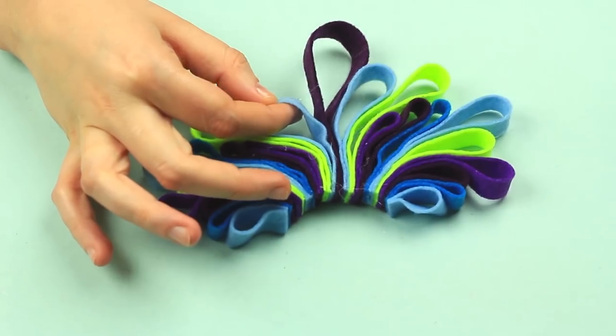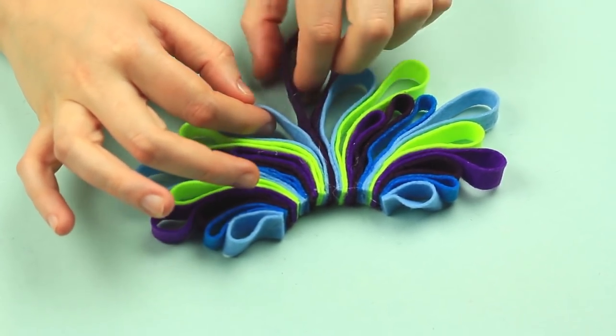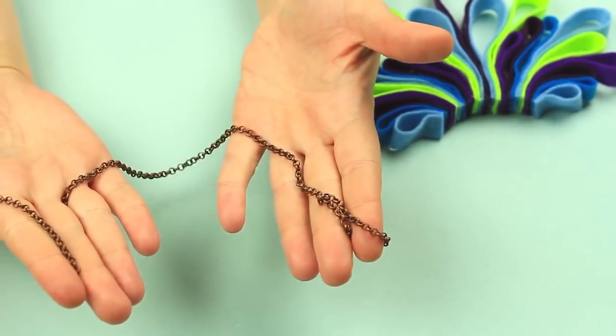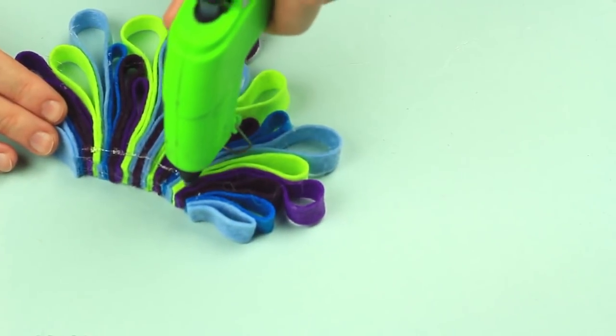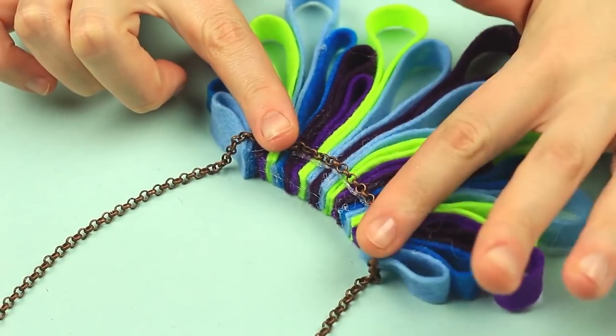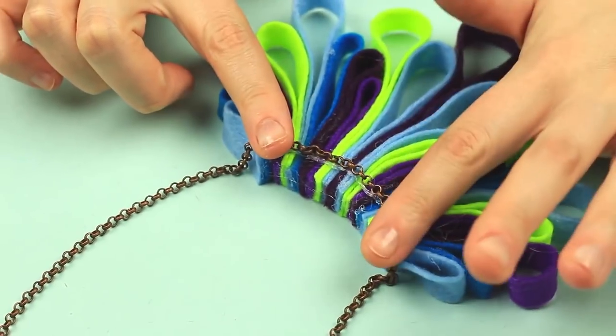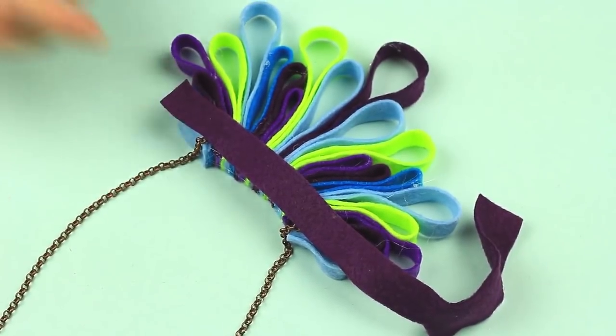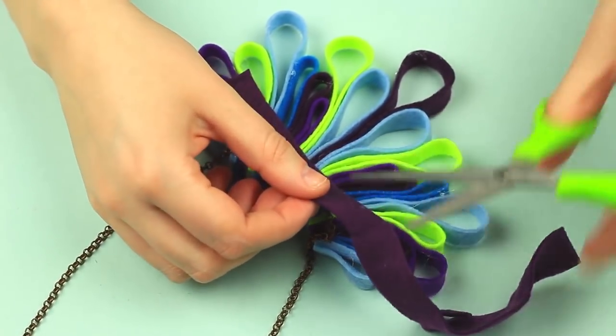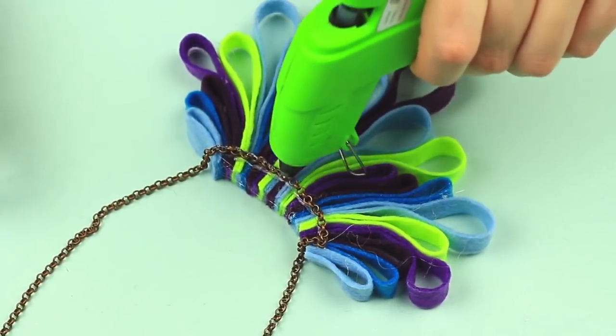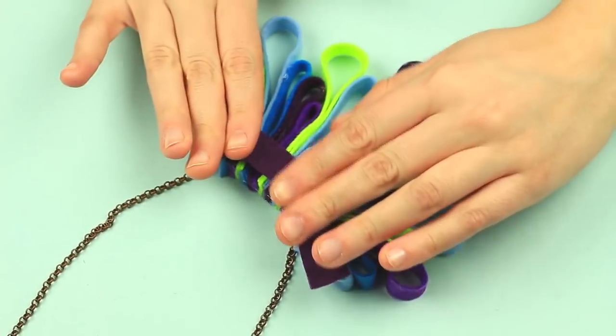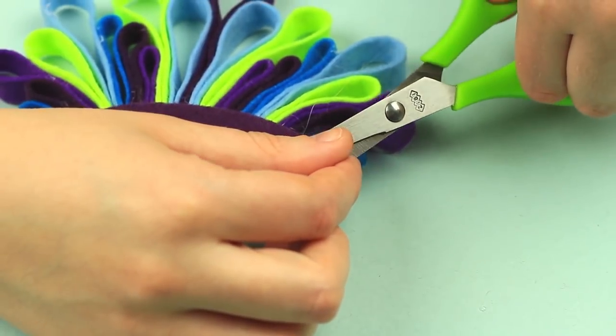Fasten extra big loops in the middle for the necklace to keep shape. Attach a chain to the back side. Cover the attachment place with a strip of dark felt. Cut off the excess. Add hot glue to the chain to attach the felt strip. Cut off the excess.